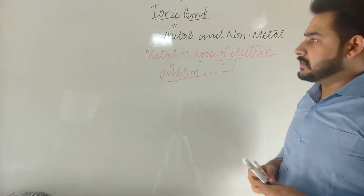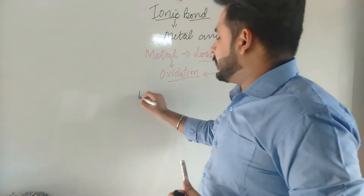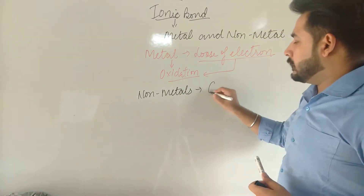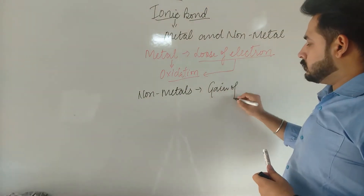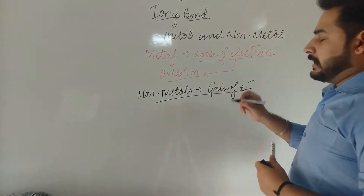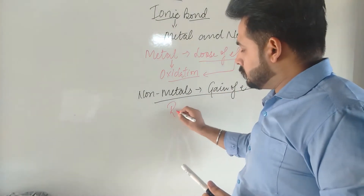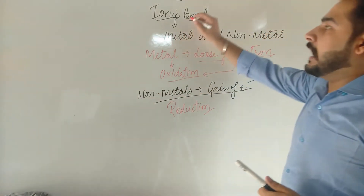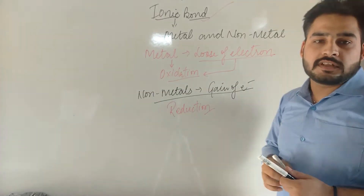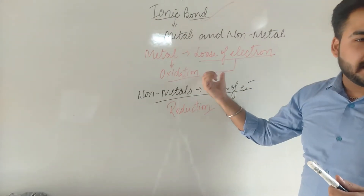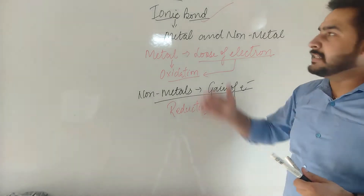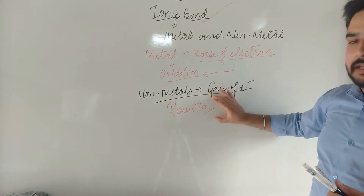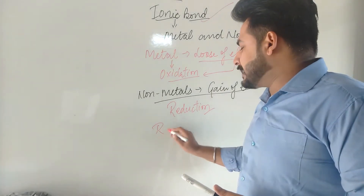In the electronic concept, loss of electrons means oxidation. And in the case of non-metals, gain of electrons takes place, which is called reduction. So in the ionic bond, when it is formed, oxidation takes place on the metal and reduction takes place on the non-metal. This means in an ionic bond, oxidation as well as reduction both take place, so it is called a redox reaction.